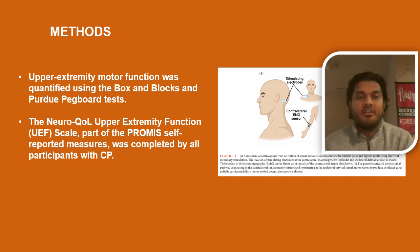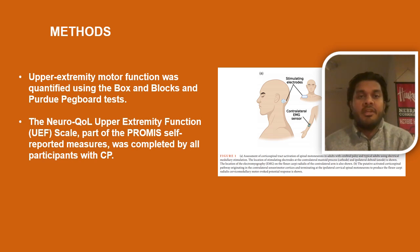We also looked at upper limb motor control using the test of arm selective control. And finally, we utilized the Neuro-QoL upper extremity function scale, particularly in participants with cerebral palsy, to evaluate and survey self-reported motor function.